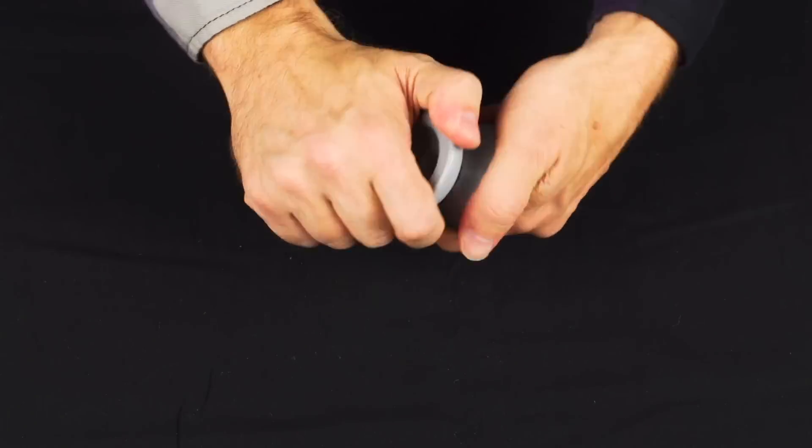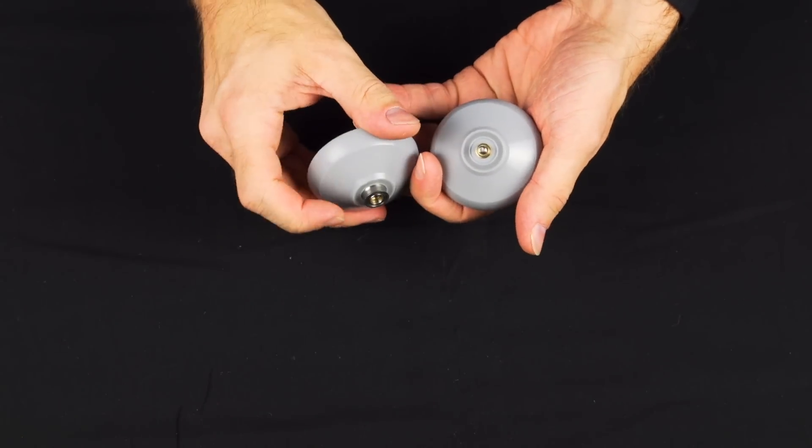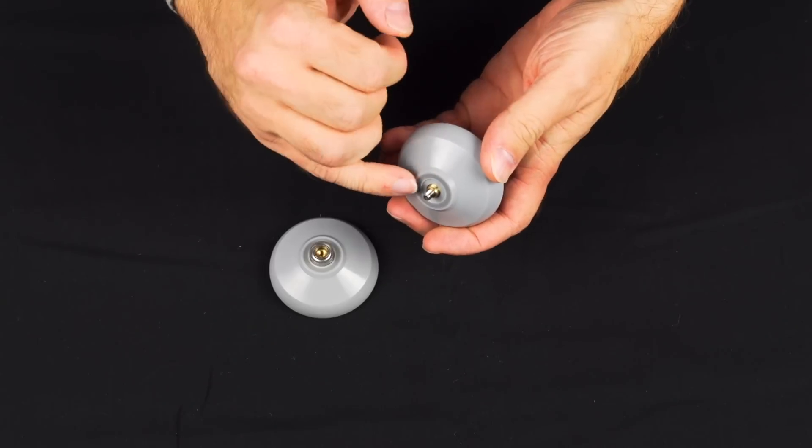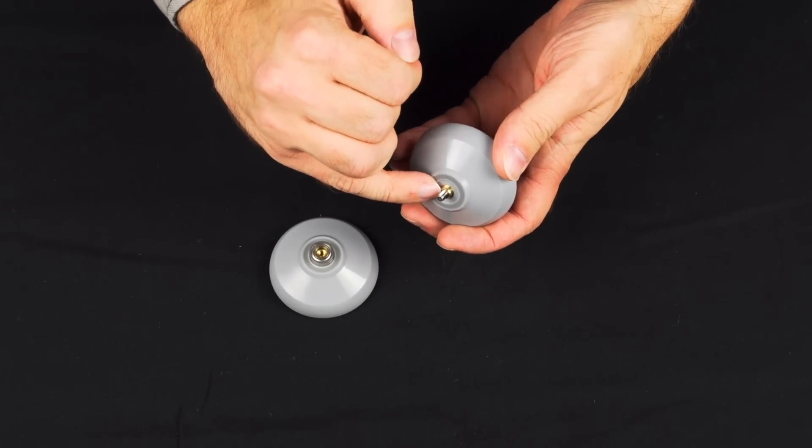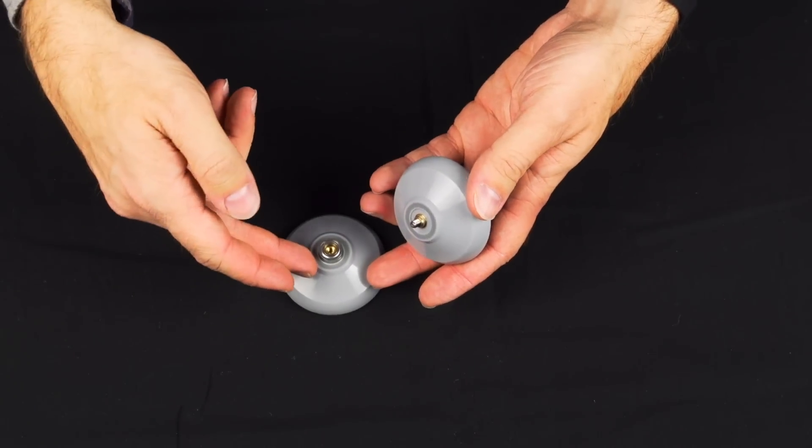You will see that same attention to detail in every single part of this yoyo. When you open it up, it comes with a center track bearing, which we are big fans of. You will also see that they have these brass metal pieces built right into the side of the yoyo. Those are for the bearing seat.